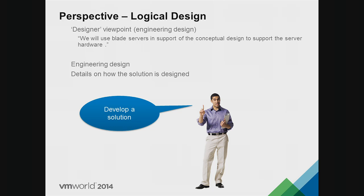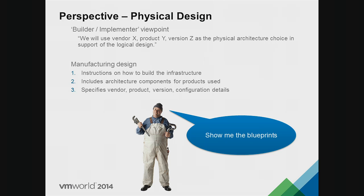The logical design is where the architect comes in — looking at the concepts the owner and stakeholder have and thinking above the actual vendor technology or specific configurations. This furthers discussion with partners, team members, and stakeholders — engineering design without choosing specific technologies. The final phase is the physical design: how do we build and deploy this? We identify vendor technologies, makes and models of hardware or software, and configuration details.